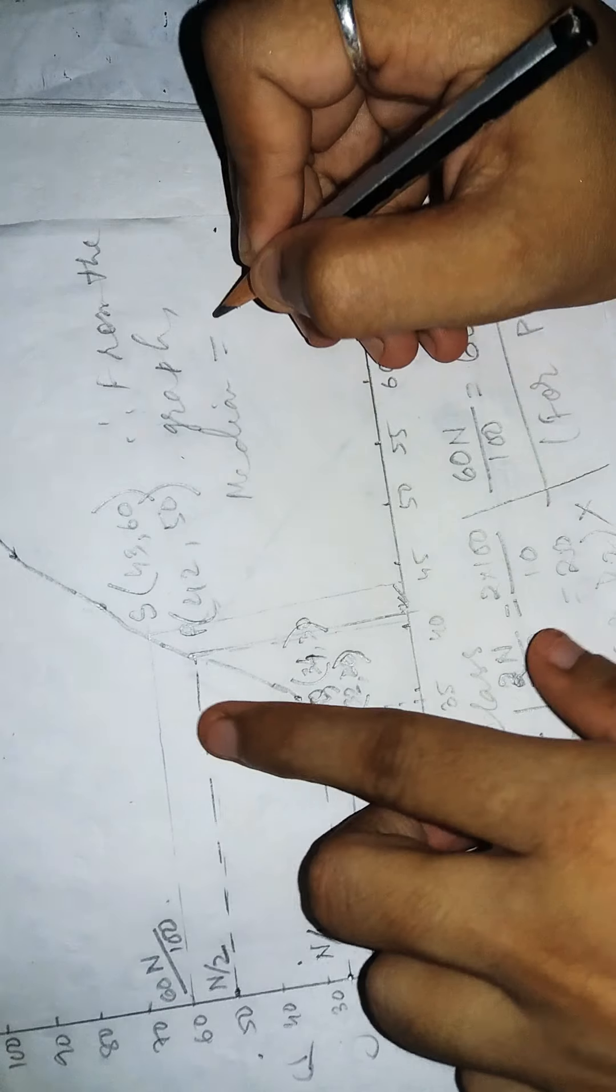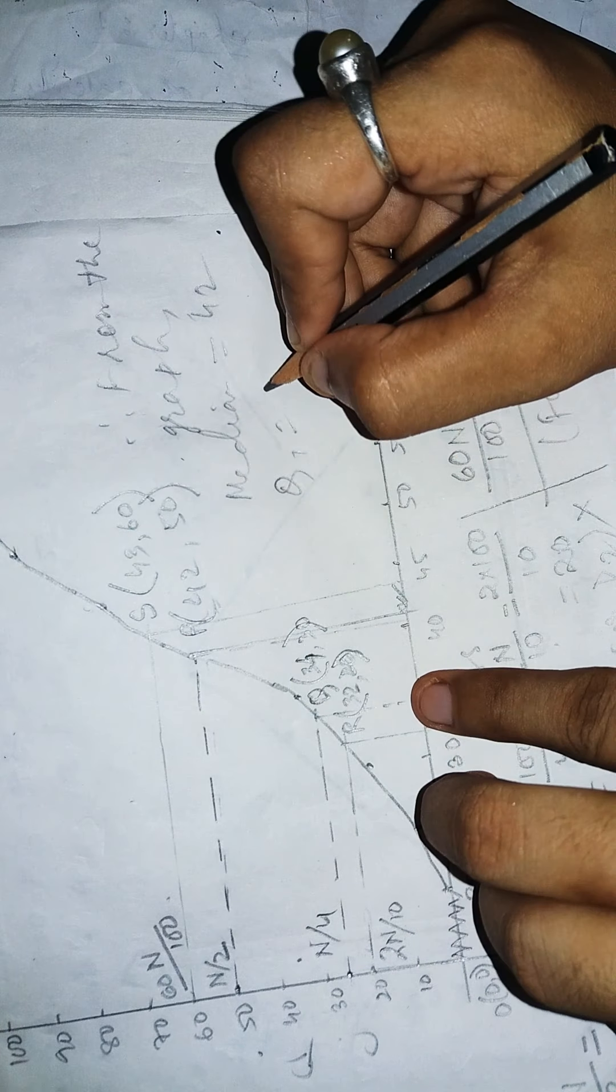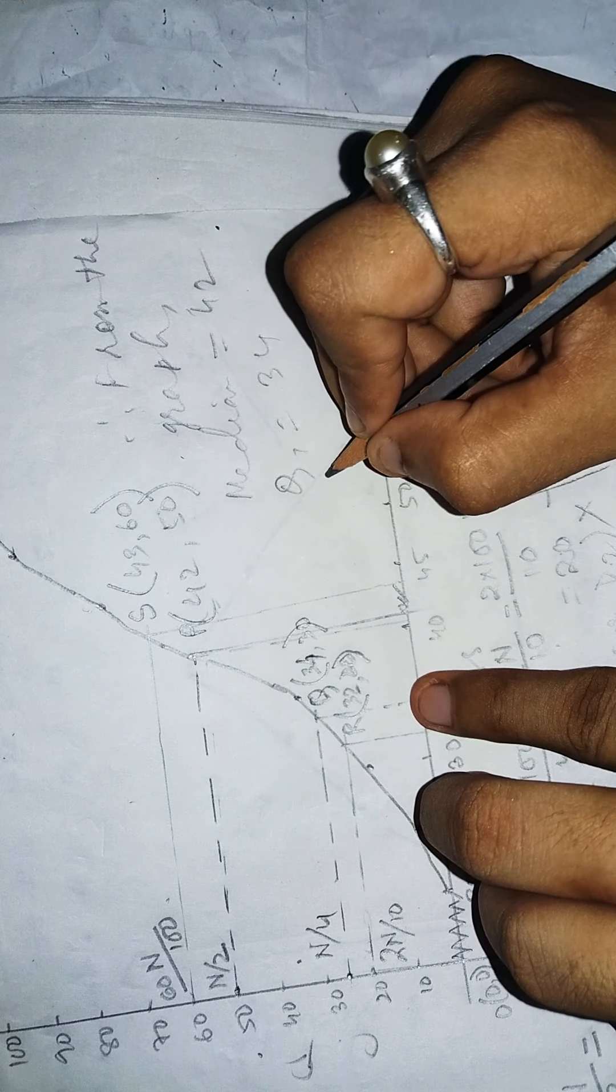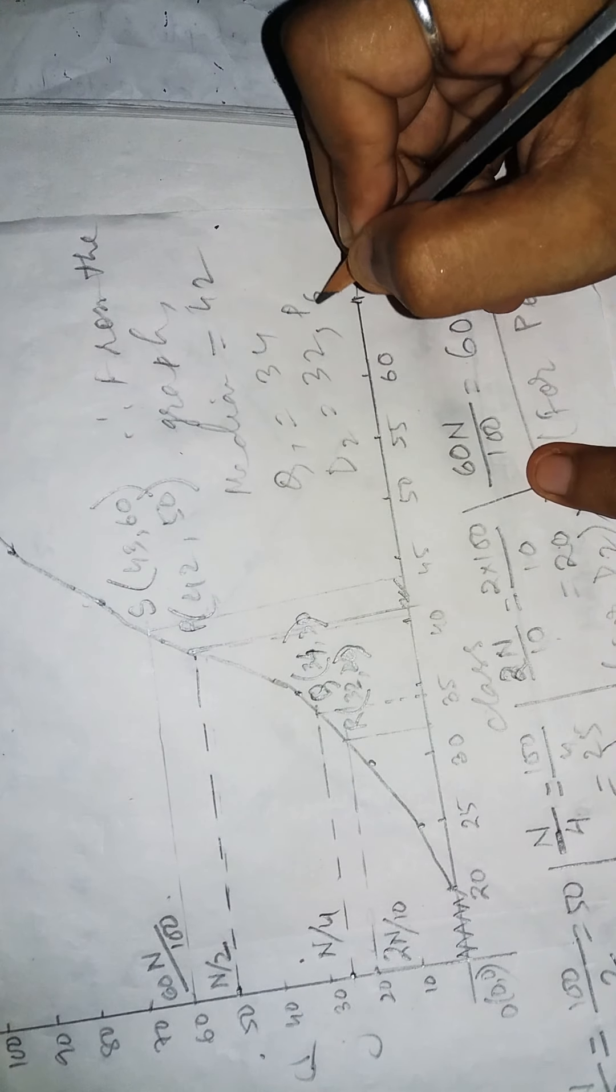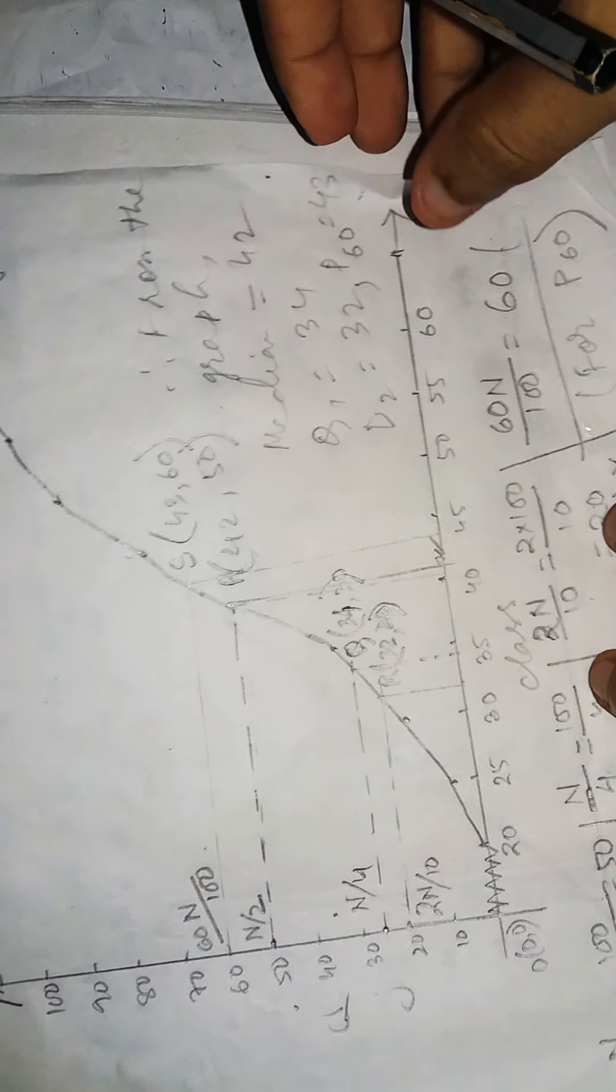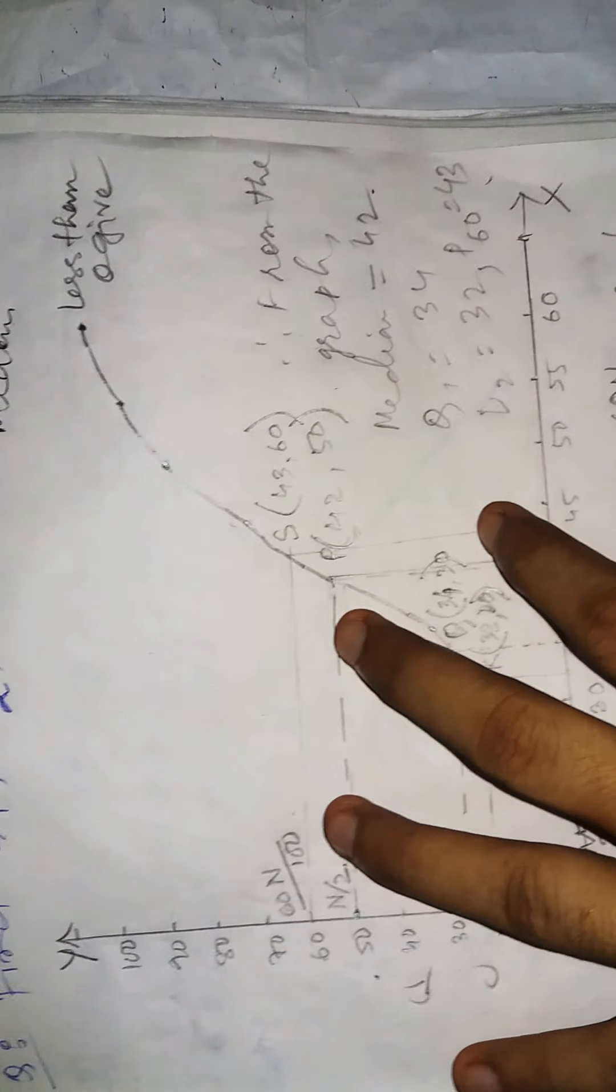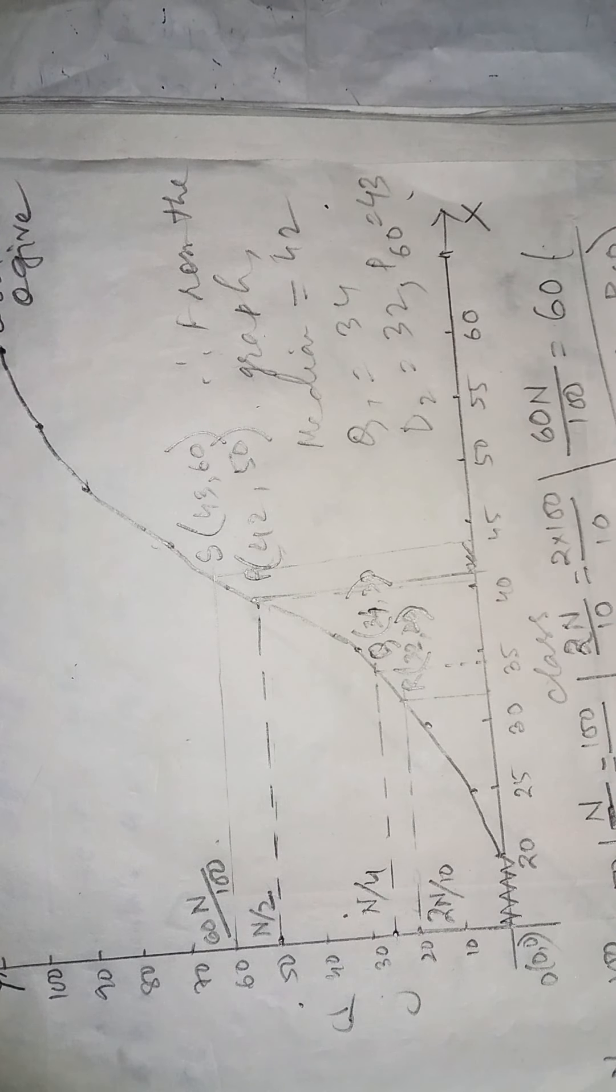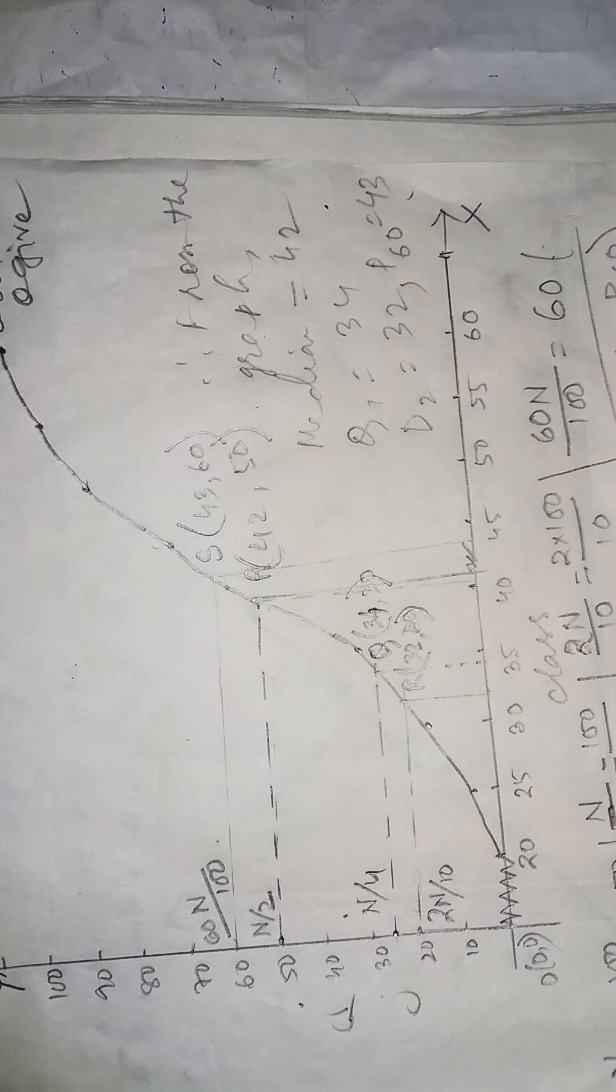From the graph, median will be 42, Q1 will be 34, D2 will be 32, and P60 will be 43. So these are the partition values of this question. That's all for today. If you have any questions, queries, or any kind of confusion, please contact me.